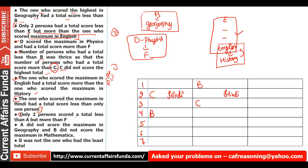Next: only two persons scored a total less than A but more than F. Again this is similar to the earlier E-English clue — two persons are between A and F, with A above and F below. So we place a gap of two between A and F.